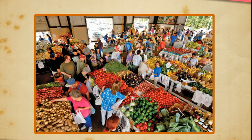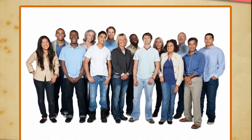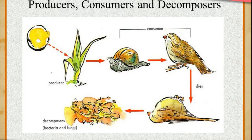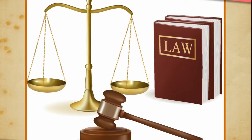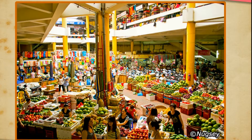Law and Social Justice: Markets everywhere tend to be exploitative of people, whether as workers, consumers or producers. To protect people from such exploitation, the government makes certain laws. These laws try to ensure that the unfair practices are kept at a minimum in the markets.